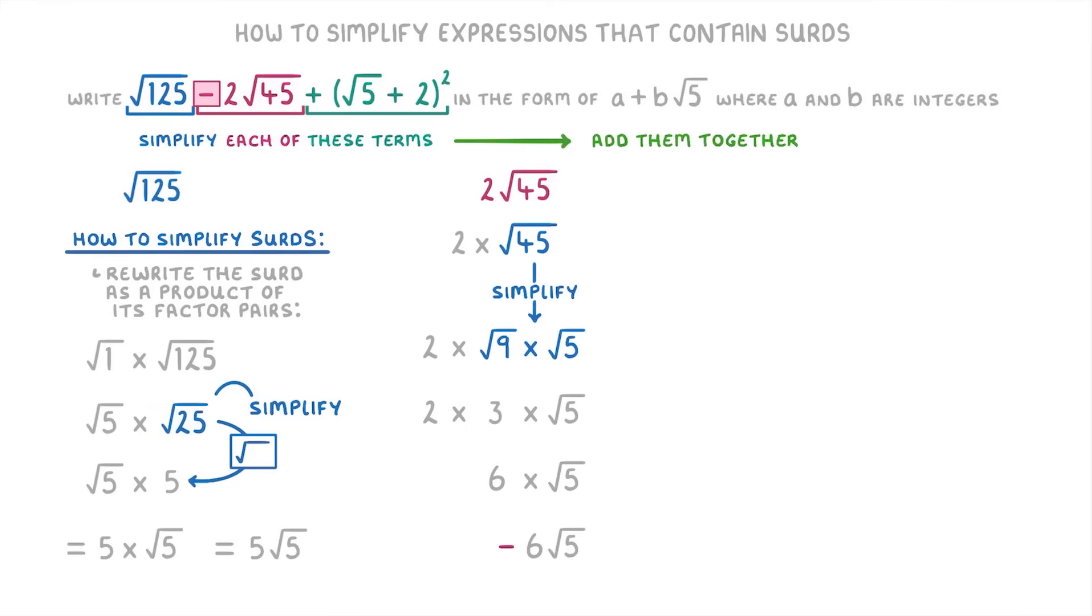The last term, √5 plus 2 all squared, is a bit trickier because it requires you to know how to expand brackets. The first thing you need to know is that when brackets have a squared symbol like this, it means that you have to multiply the entire bracket by itself. So you want to write two of these brackets next to each other and then multiply everything in this first one by everything in this second one. So √5 times √5, which is 5, plus √5 times 2, which is 2√5, plus 2 times √5, which is 2√5 again, and finally 2 times 2, which is 4.